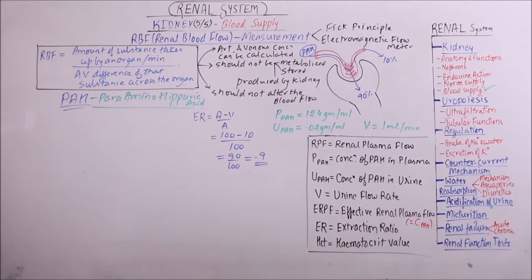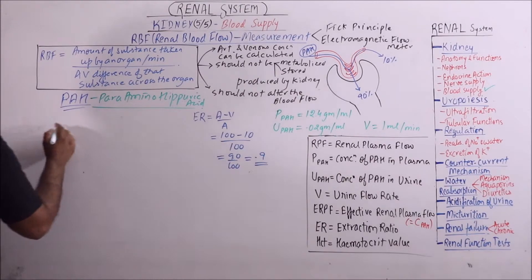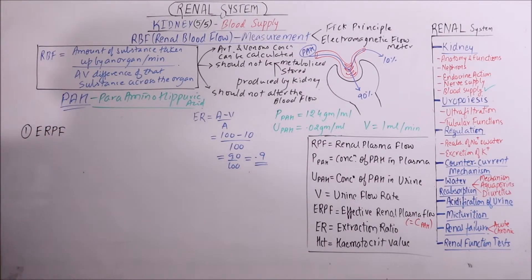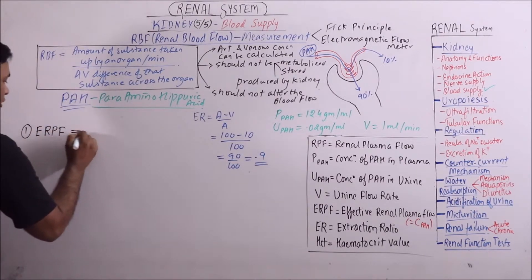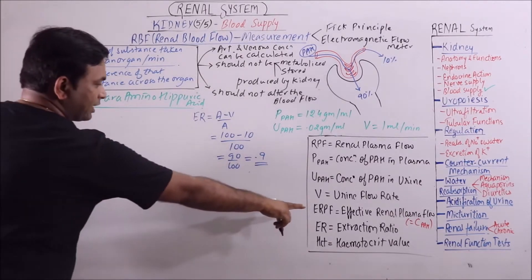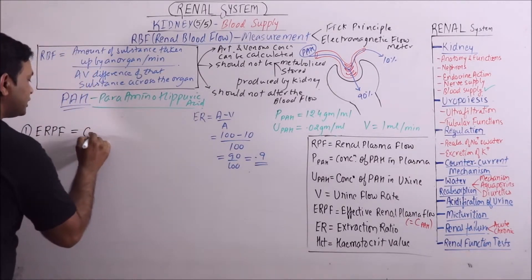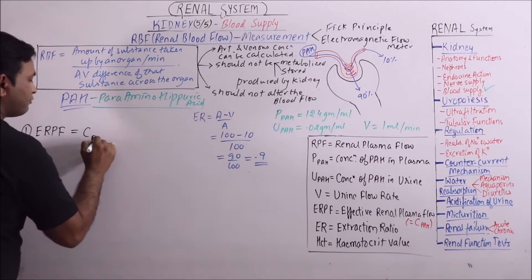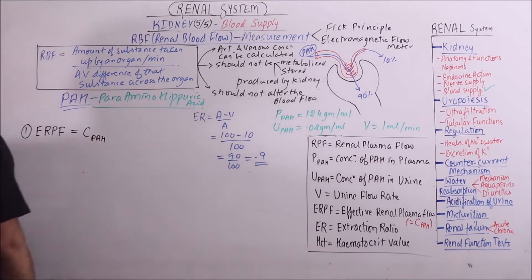Now we will start calculating the RBF. For RBF calculation, first we have to calculate effective renal plasma flow, which is equivalent to the clearance of PAH.